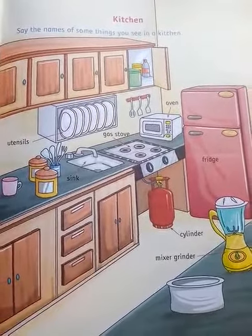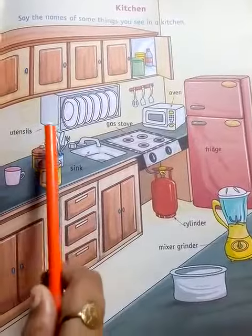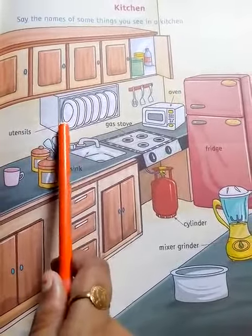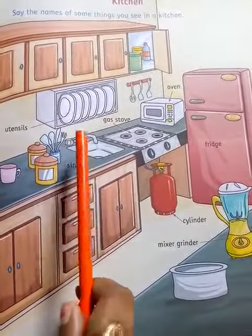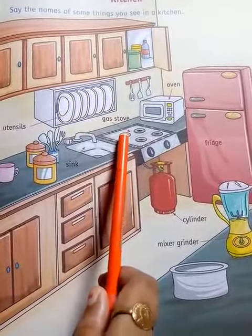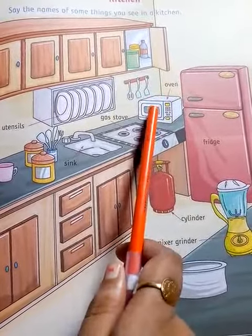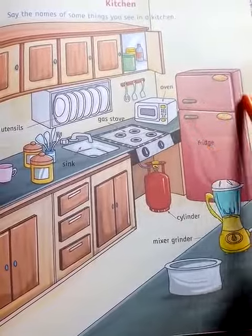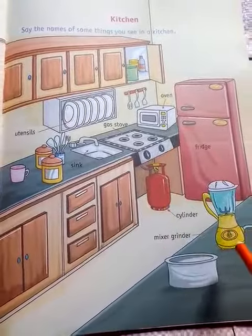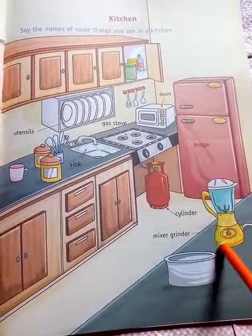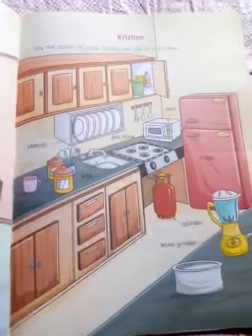Kitchen. Read the names of the things that we see in a kitchen: utensils, sink, gas stove, oven, fridge, cylinder, mixer grinder. Read the names three times at your home.